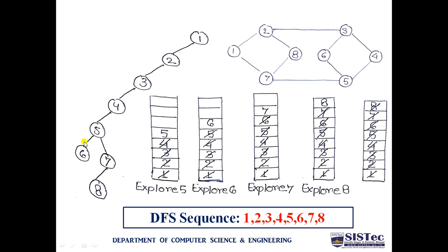From node 6, there is no other path available in the graph, so we backtrack to node 5. From 5, there is another option: 7. We visit 7, delete 6 from the stack, and put 7 at the top. Exploring node 7, we get node 8. Node 7 is explored, and 8 is now at the top. We visit node 8 and explore it. From 8, nodes 2 and 7 are already visited, so no new child is created. All nodes have been visited and traversed — the process ends.